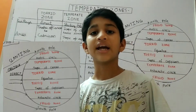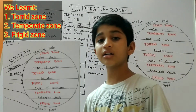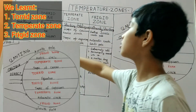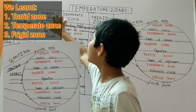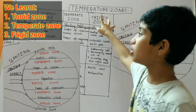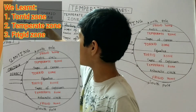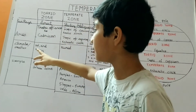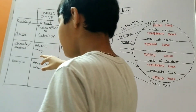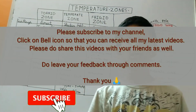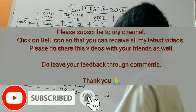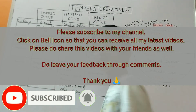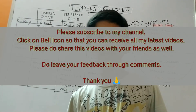In this video, we learnt about temperature zones — the torrid zone, the temperate zone, and the frigid zone. We learnt about the sunrays, area, climate or weather, and examples of all three zones. Subscribe to Clear Academy and hit the bell icon. Don't forget to share it with your friends. See you in the next video.